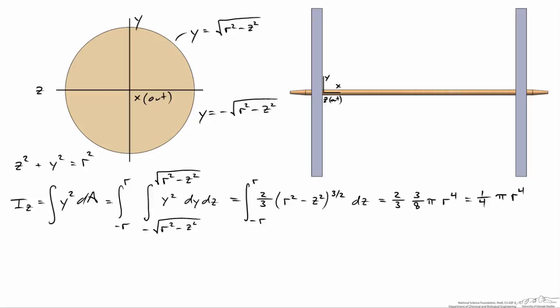This is the moment of inertia for a beam with a circular cross-section. Note that due to symmetry, this equation is the same whether bending vertically about the z-axis or horizontally about the y-axis.